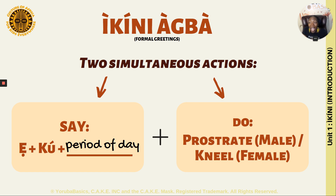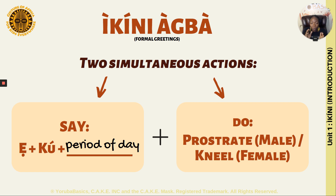The E is actually the pronoun — the pronoun you would use for that elderly person. Unlike English, in Yoruba we separate the pronouns. We have a pronoun for someone that's older than you, and then someone that is the same age as you. For someone the same age as you, you would use O, but we're concentrating on the formal one. So you say E KU.